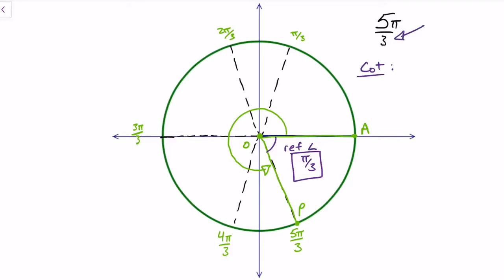Coterminal angles, well, the denominator's 3, so I know there's 6 pieces. I always just double that and then add that to the numerator. 5 plus 6 is 11. So one coterminal angle is 11 pi over 3, and then 11 plus 6 is 17 pi over 3.